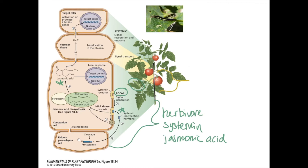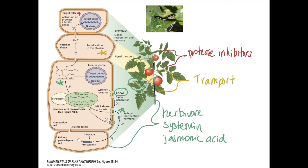From there, we have the transport of jasmonic acid, which happens in the phloem. The jasmonic acid is transported by the phloem to target cells — anywhere that hasn't already been damaged by the herbivore. The jasmonic acid activates the expression of genes involved in the response to the herbivore. A transcription factor causes the expression of a gene that codes for something called a protease inhibitor. So at the target cell, we get protease inhibitors produced.